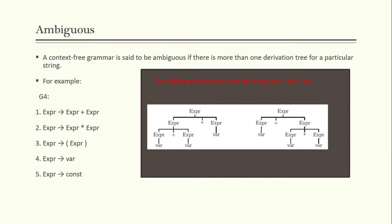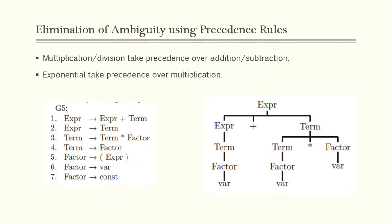In programming, it is not good to have an ambiguous grammar because an ambiguous grammar creates confusion when you want to do a syntax analysis. So for an ambiguous grammar, we need to do elimination — we need to remove the ambiguity.